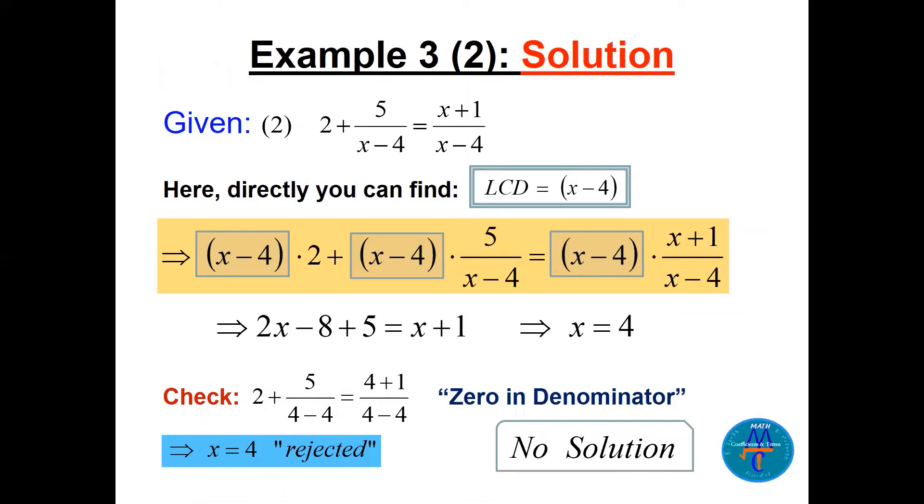Now one slide, the whole solution in details. x minus 4, x minus 4. So the LCD is x minus 4. See, we multiply the first one here, this 2. You see this 2? This 2 here, this 2 is the number of the question. The first 2 here, multiply by x minus 4. This fraction multiply by x minus 4, this fraction multiply by x minus 4. Why x minus 4? The least common denominator. So this will be 2x minus 8. We cancel this, we get only 5. We cancel this, we get x plus 1.